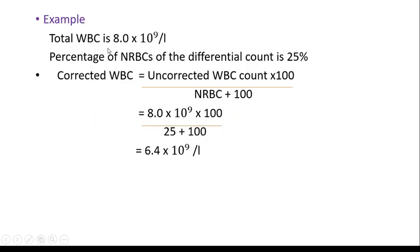As an example, the total WBC count is 8.0 into 10 to the power 9 per liter. The percentage of NRBCs of the differential count is 25%. Corrected WBC equals uncorrected WBC count multiplied by 100 divided by NRBC plus 100, which equals 8.0 into 10 to the power 9 multiplied by 100 divided by 25 plus 100. The corrected WBC count equals 6.4 into 10 to the power 9 per liter.